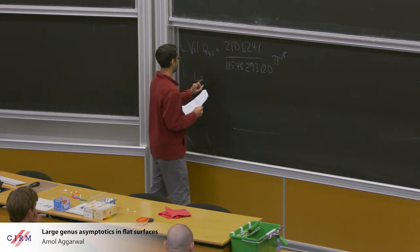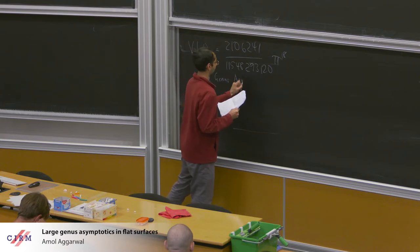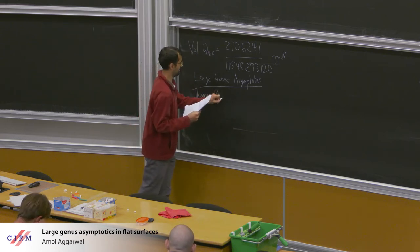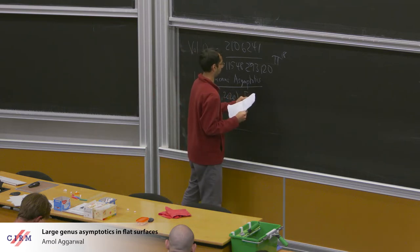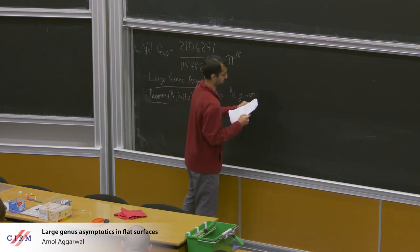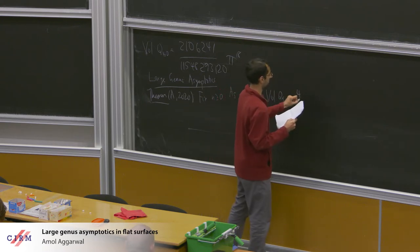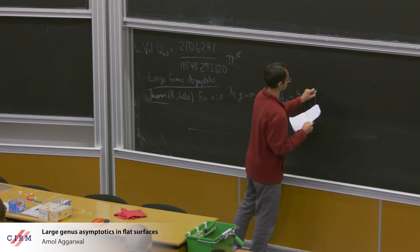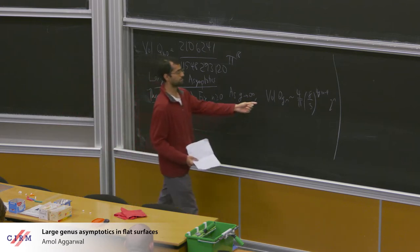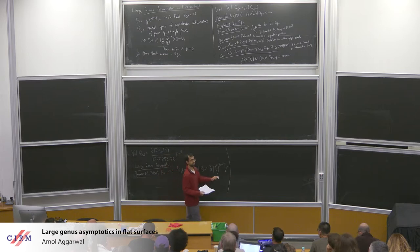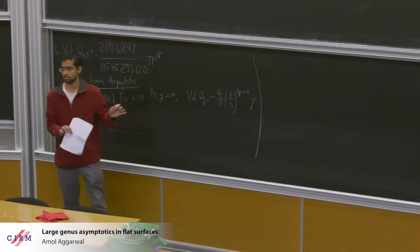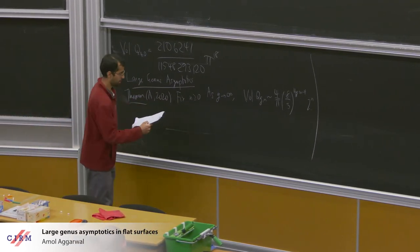Here is the theorem. Fix n — say n equals 10 or 0 — then as the genus tends to infinity, the volume vol(Q_{g,n}) scales like (4/π) · (8/3)^{4g+n−4} · 2^n. The left side divided by the right side tends to 1 as g → ∞, with n fixed. This is a fairly explicit expression for what these volumes are doing as the genus tends to infinity.